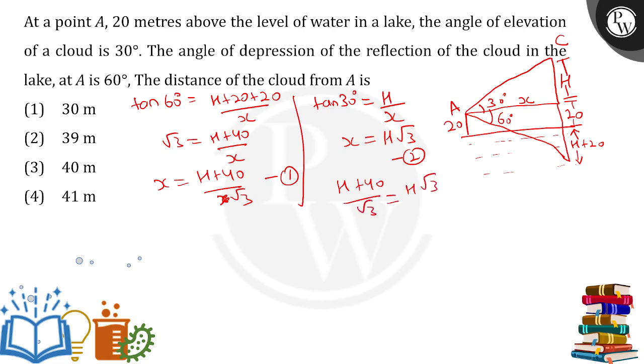So root 3 goes on the other side. 3h. 3h minus h, that is 2h. 2h is equals to 40. So from that, h comes out to be 20. h value we have calculated to be 20 meters.